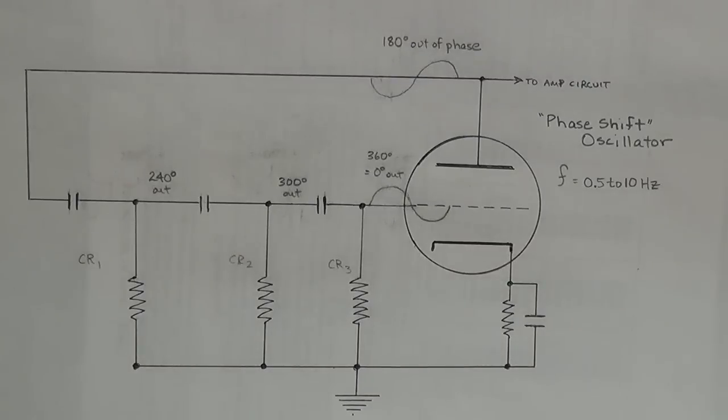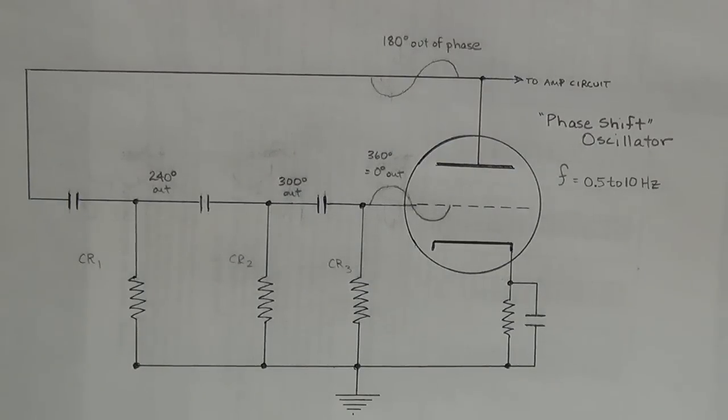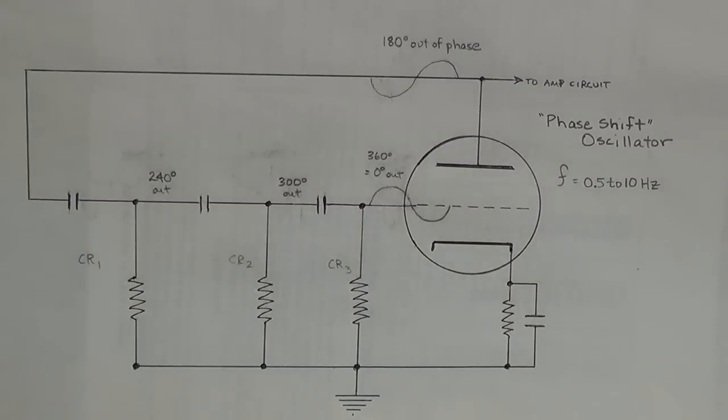Well, that's about it for the bias shifting type of tremolo. We saw how the phase shift oscillator is constructed, what its design principles are, and how it functions. And then we've seen how it can interact in a couple different ways within an amplifier to control the bias either of the preamp tubes or the output tubes. We also saw how intensity control, speed control, and a remote on-off foot switch can be added to the circuit.